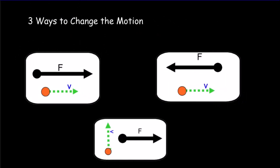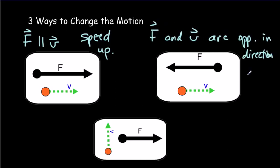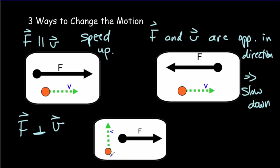There are three basic ways that a force can change the motion. First, if the force is parallel to the velocity and in the same direction, the object is going to speed up. However, if the force and the velocity are opposite in direction, the object is going to slow down. The third possibility is when the force is perpendicular to the velocity — if an object is moving upward and we push it to the right, it will change direction and turn. So forces can cause speeding up, slowing down, or turning.